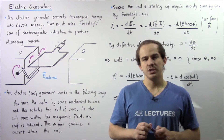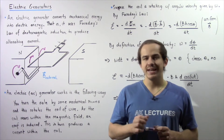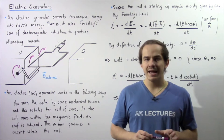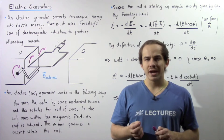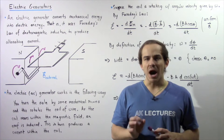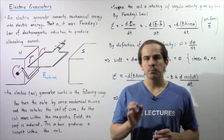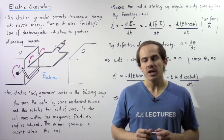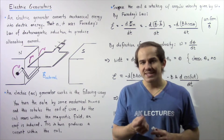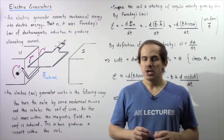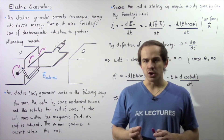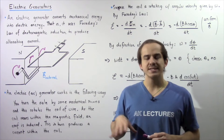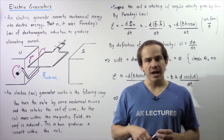Recall that in our discussion on alternating electric current, we said that electric generators are responsible for producing alternating electric current. But how exactly do electric generators work? That's what we're going to discuss in this lecture.